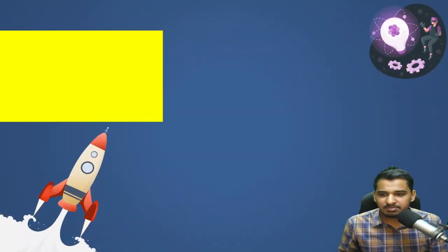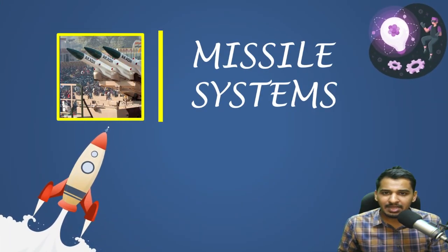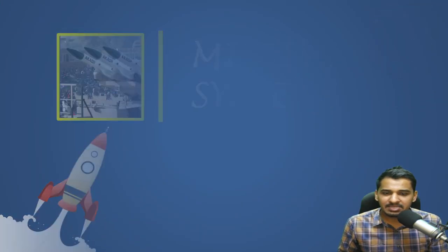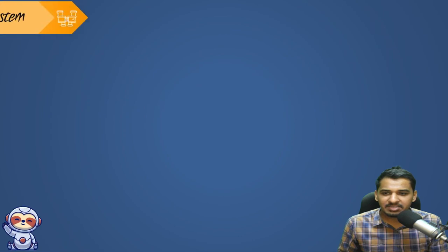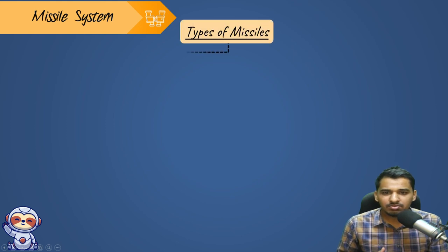Let us start with missile systems of India. Missile systems can be classified in various types — on the basis of speed, range, or operation and use. First we will look at classification based on speed.